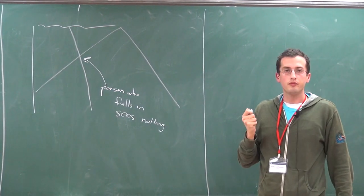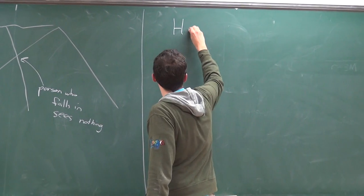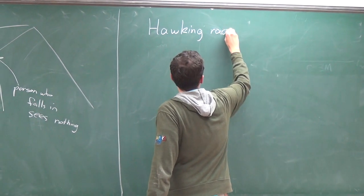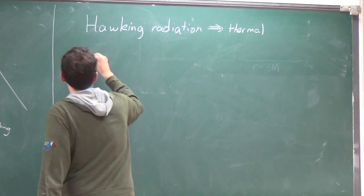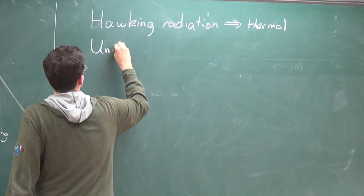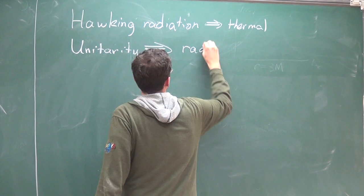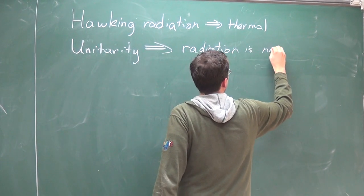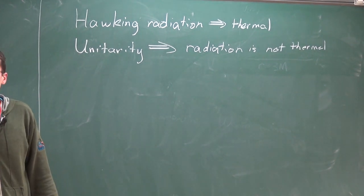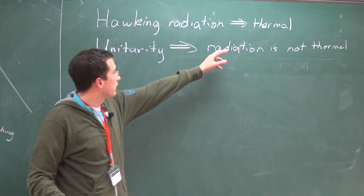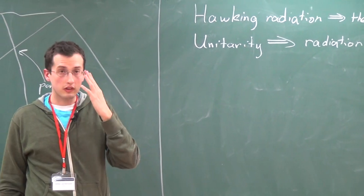Hawking radiation is thermal — in other words, information is lost. Unitarity says the radiation should not be thermal; it should be in some pure state related to the stuff that formed the black hole. Here's a conflict. We don't actually know how to resolve it, but we're going to say that due to Planck scale physics, Hawking's calculation was wrong.